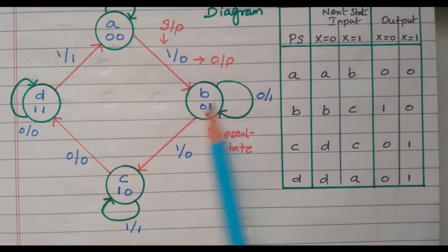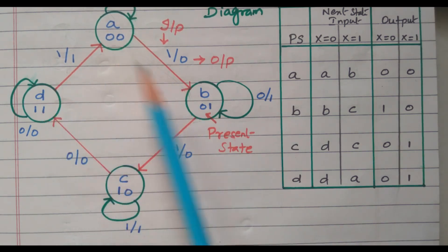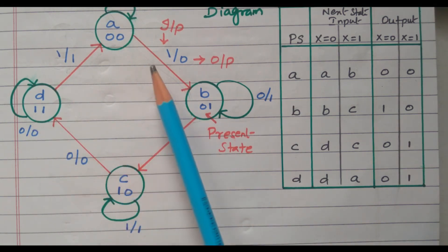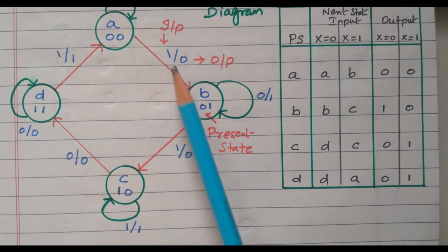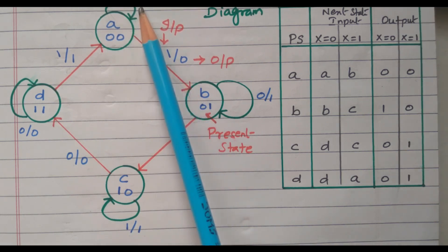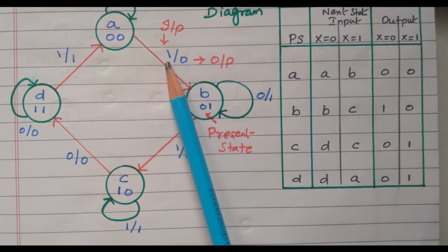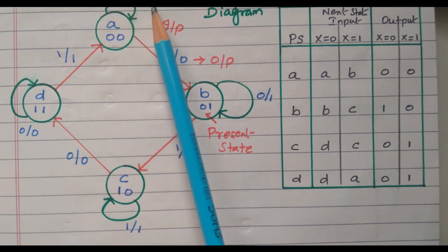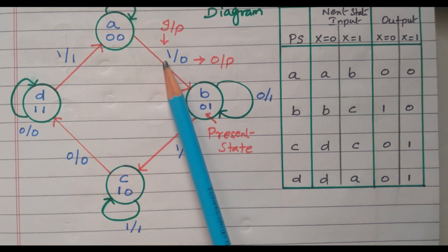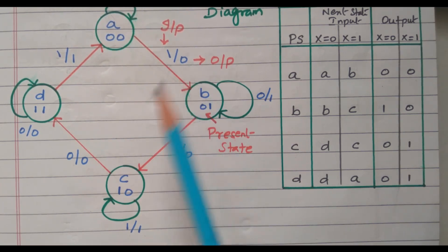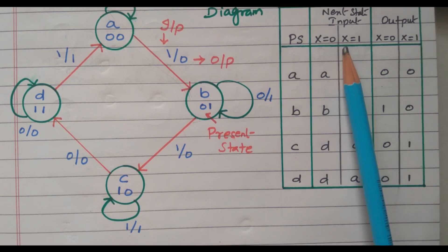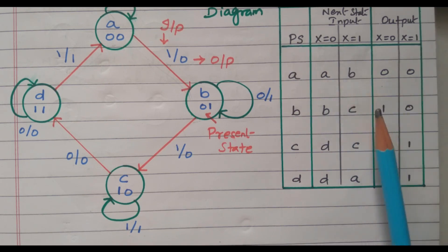States A, B, C, D correspond to present states 00, 01, 10, 11. We check what happens for each input — if input is 0 or if input is 1. For example, for A: input 0 means A goes to A with output 0; input 1 means A goes to B with output 0. That is clearly shown in the state table.